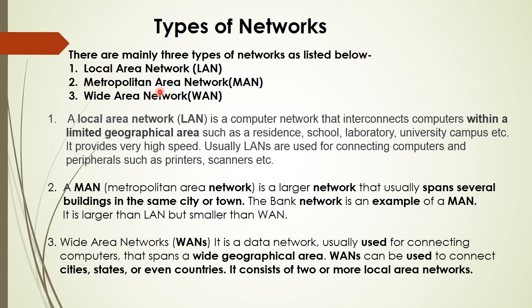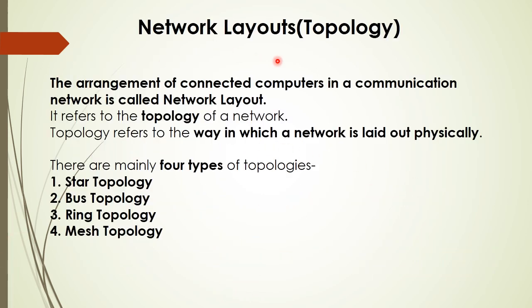Types of networks: LAN (Local Area Network), MAN (Metropolitan Area Network), and WAN (Wide Area Network). LAN interconnects computers within a limited geographical area, generally used in schools, laboratories, homes, and campuses. MAN is larger than LAN and is limited to a city. WAN is used to connect computers across a wide geographical area — connecting cities, states, or even countries. The internet is also called the global networking of computers and is connected to WAN, which consists of two or more local area networks.